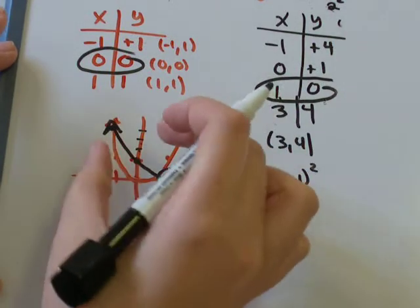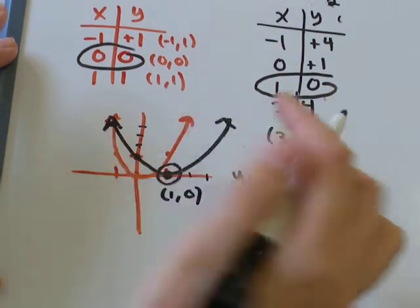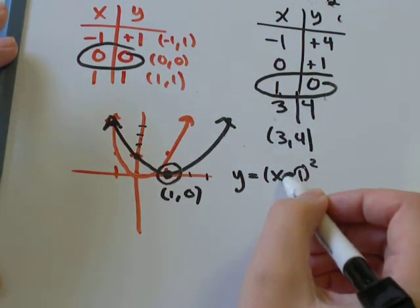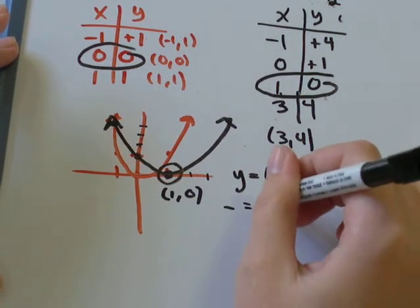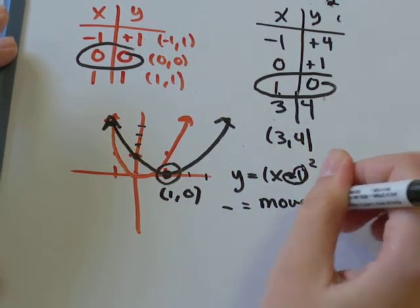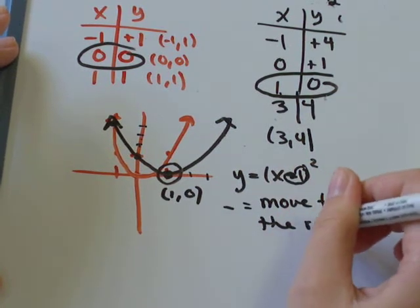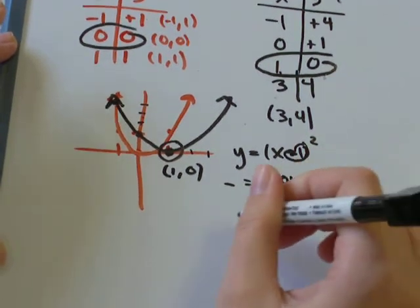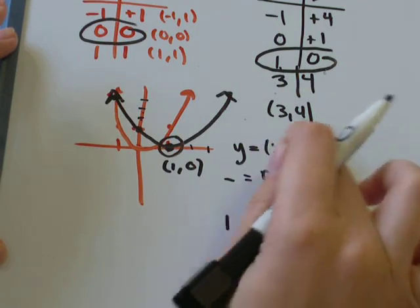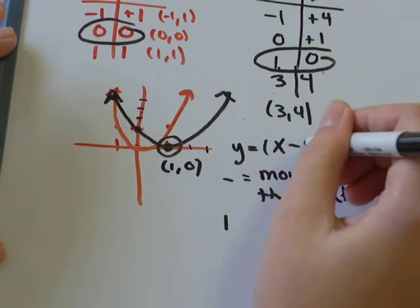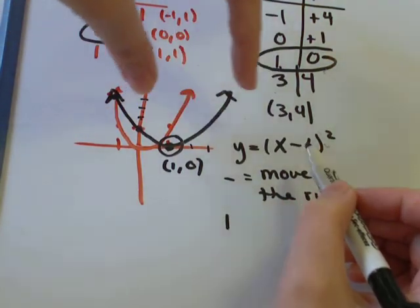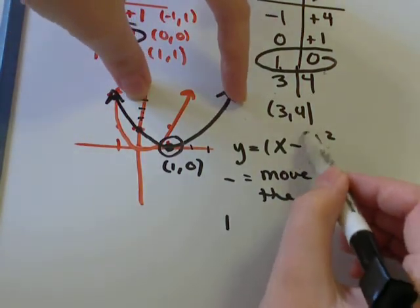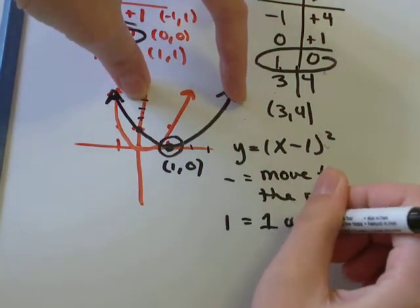So when we've got y equals x minus 1 squared, what we're doing is taking our original graph and we're moving it. Because we've got negative 1 here, the negative tells you move to the right. And the 1 tells me we're moving our whole graph to the right one unit.